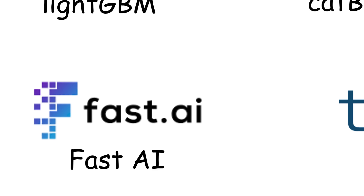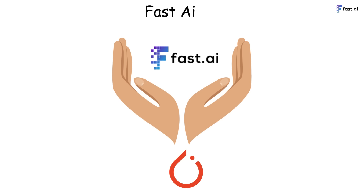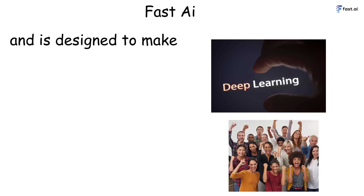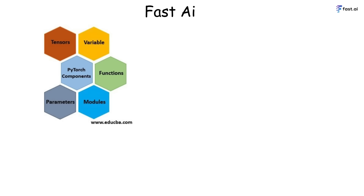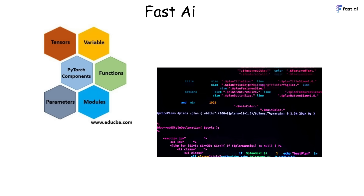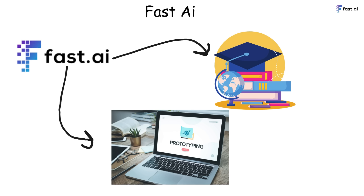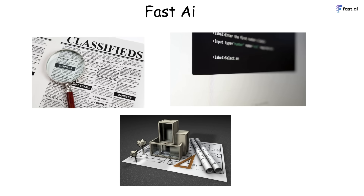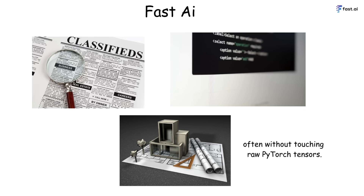Fast.ai is built on top of PyTorch and is designed to make deep learning accessible to everyone. It abstracts away the complex parts of PyTorch and lets you train high-performing models with just a few lines of code. It's especially popular in education and fast prototyping — you can build image classifiers, text generators, or tabular models quickly, often without touching raw PyTorch tensors.